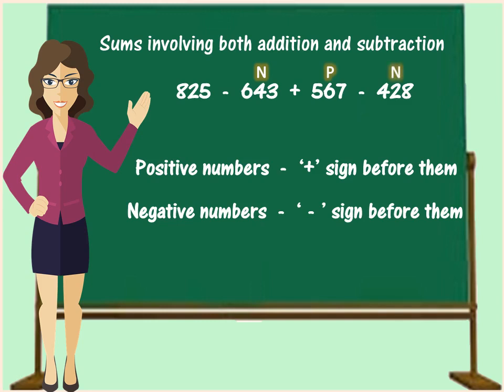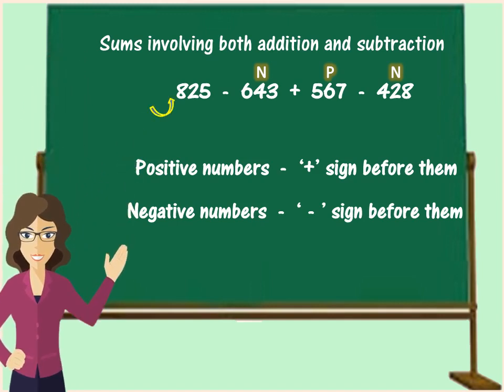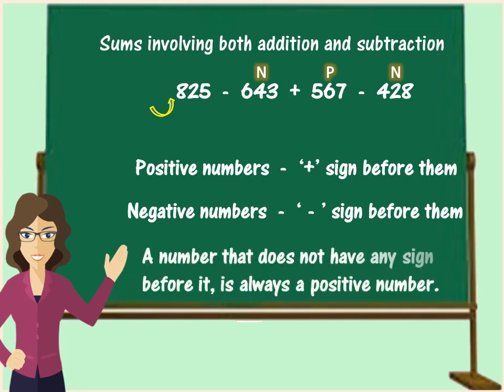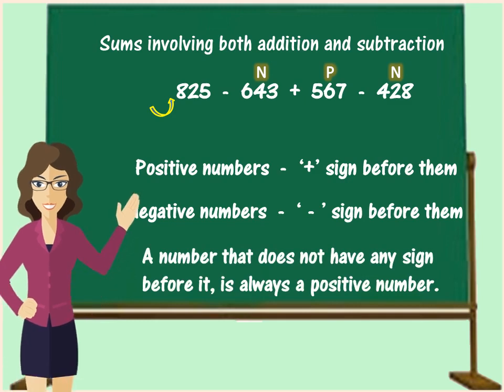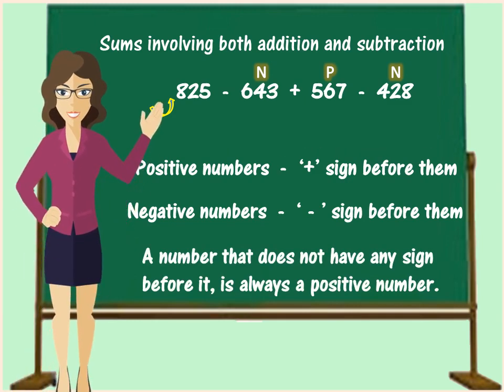But what about 825 which does not have any sign before it? Here, you must remember that a number which does not have any sign before it is always a positive number. This means 825 is a positive number and we will write P.